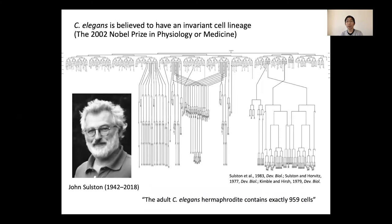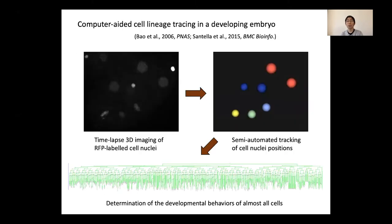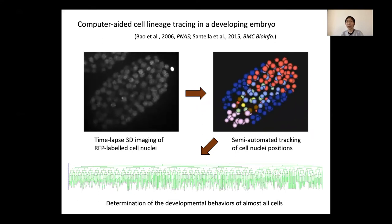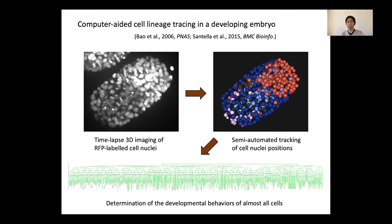The nematode C. elegans is especially known for its robust development. C. elegans is believed to have a completely fixed cell lineage from the fertilized egg to the adult. The lineage was described by John Sulston, who won the Nobel Prize in 2002. Based on his works, it is widely assumed that the adult C. elegans contains exactly 959 somatic cells. To precisely characterize the effects of environmental factors on C. elegans' embryogenesis, we extensively traced the cell lineage in embryos.